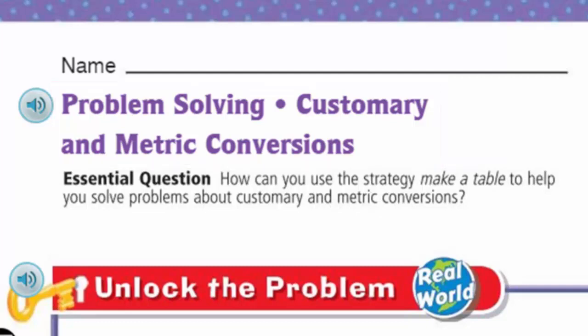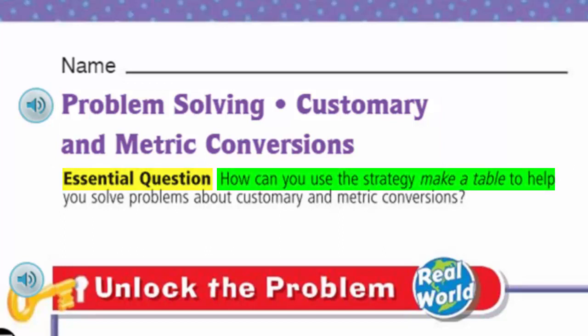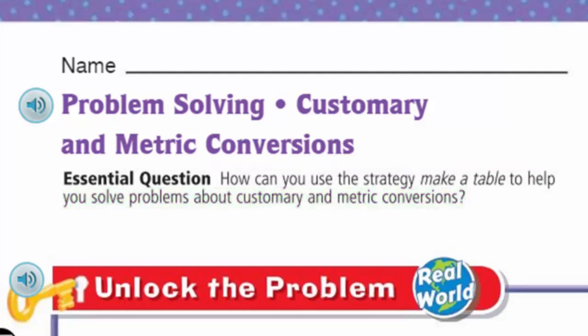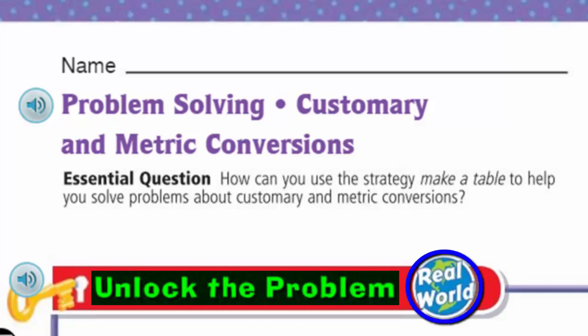We need some focus, my friends — we need a purpose. The essential question is our purpose: how can you use the strategy 'make a table' to help you solve problems about customary and metric conversions? We're going to be using both customary and metric conversions, and we're going to use the strategy 'make a table.' But first we need to unlock the problem — it's real world, baby!